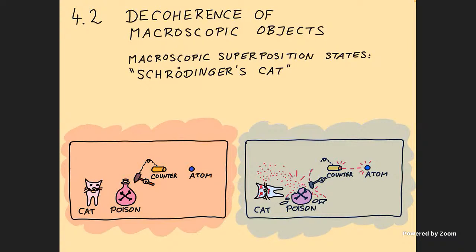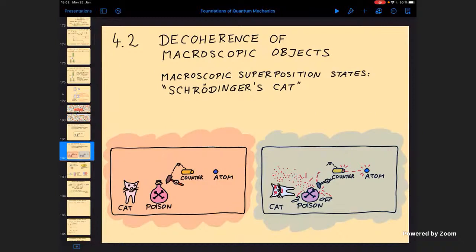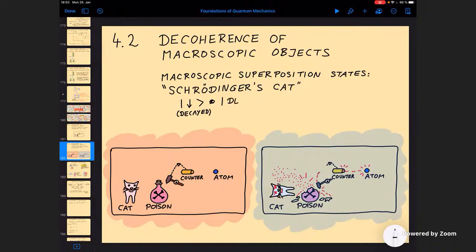At the same time, he also coined the term entanglement in this case, because if we write down the full state, we could say the atom is actually decayed with some likelihood. I can write this as spin down or decayed, which is going along with the cat being dead and all the other processes having happened — the vial of poison is broken, and so on — plus, in a superposition, the atom is still not decayed and the cat is alive. So this is clearly an entangled state.